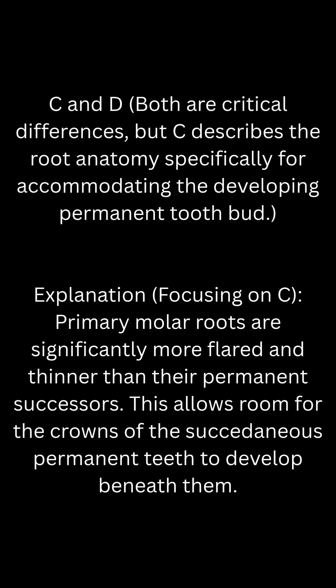Correct. Answer: C and D. Both are critical differences, but C describes the root anatomy specifically for accommodating the developing permanent tooth bud. Explanation focusing on C: Primary molar roots are significantly more flared and thinner than their permanent successors. This allows room for the crowns of the succedaneous permanent teeth to develop beneath them.